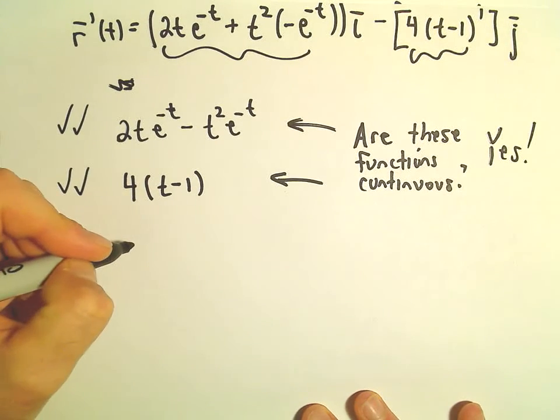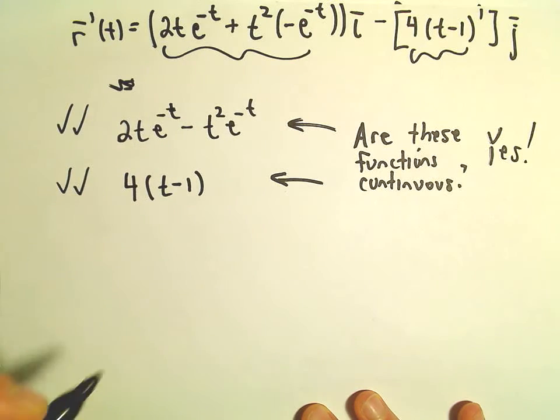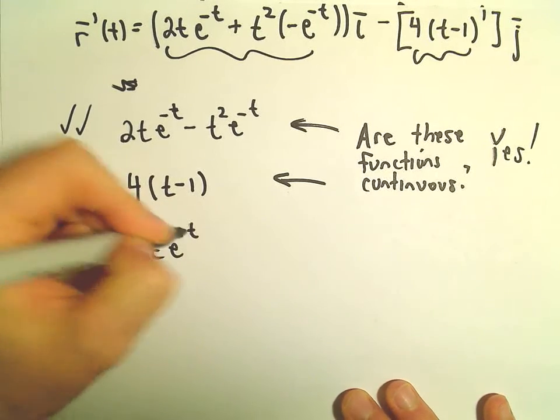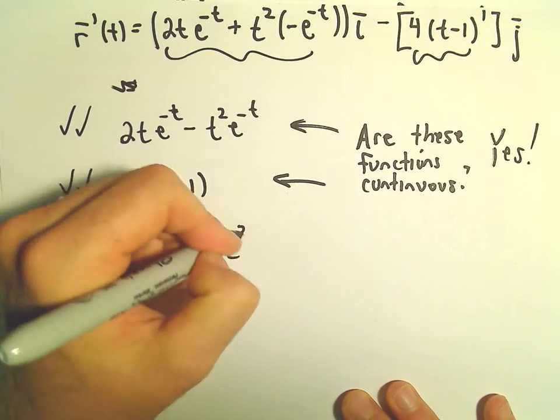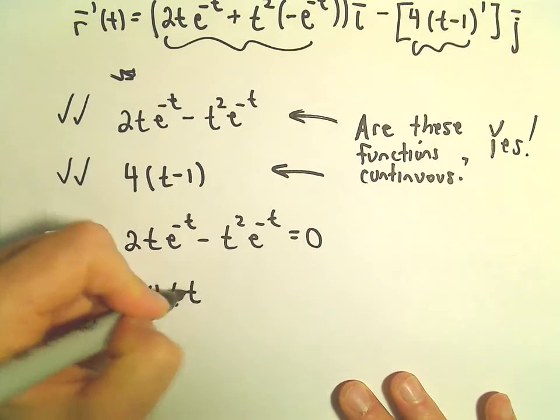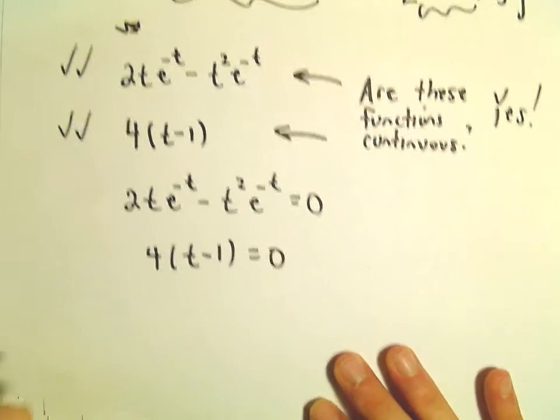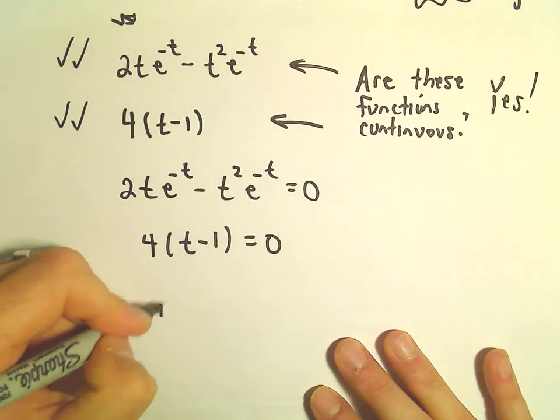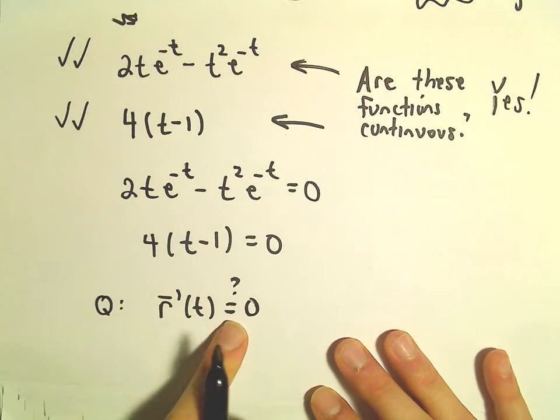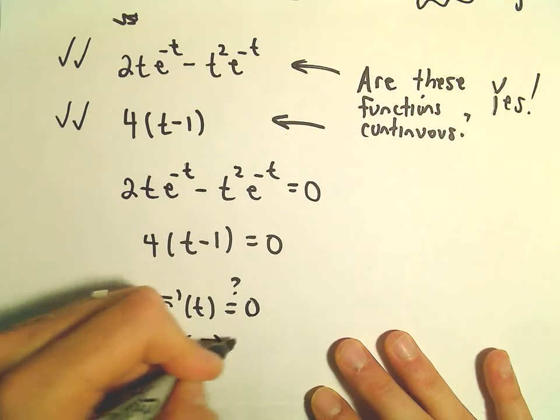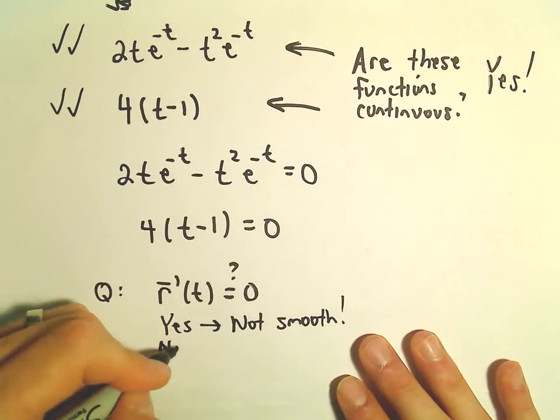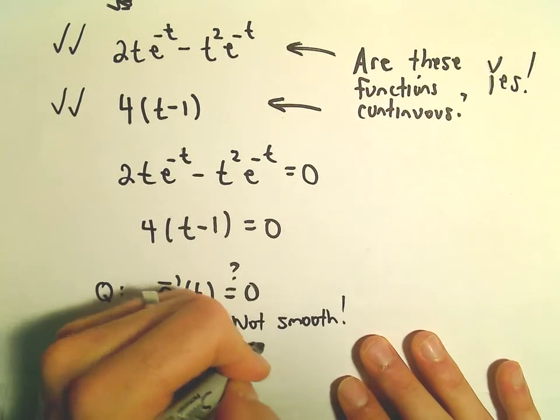And now what we have to do is we have to try to solve the system where we set each part equal to 0. If we set the first one equal to 0, we've got 2t times e to the negative t minus t squared times e to the negative t equals 0. And then we have 4 times t minus 1 equals 0. So the question is, are there any values of t so that r prime of t equals 0? If the answer is yes, that means the curve is not smooth. If the answer is no, that means the curve will be smooth.